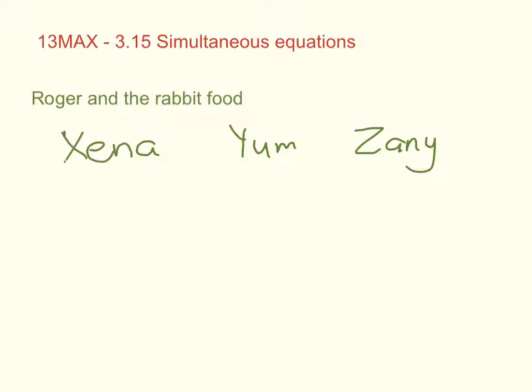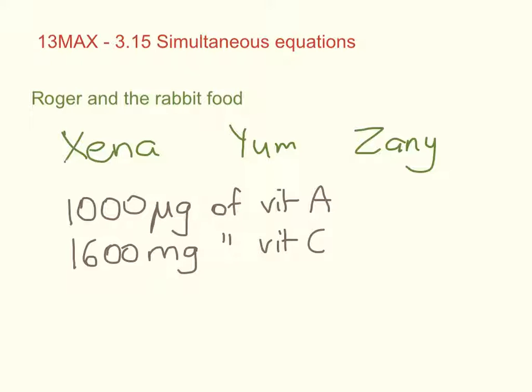Here's what we're told. We're told that he wants his rabbits to have this much food: 1,000 micrograms of vitamin A, and he wants to have 1,600 milligrams of vitamin C, and 2,400 milligrams of vitamin E. And then we're told about what each gram of the three different foods contains. So what we're looking for is how many grams of food Roger should feed his rabbits to meet their exact daily vitamin requirement.